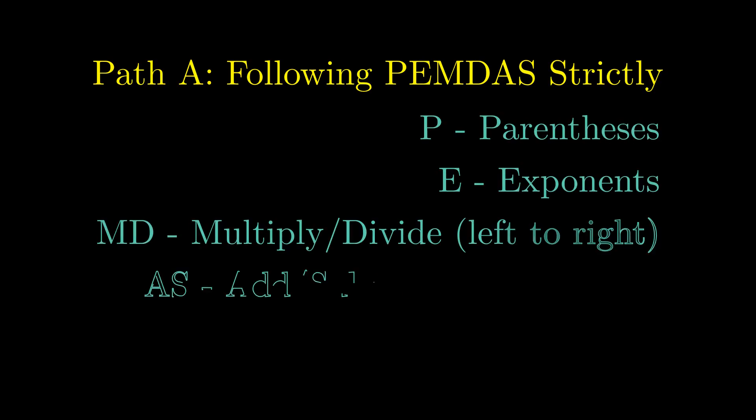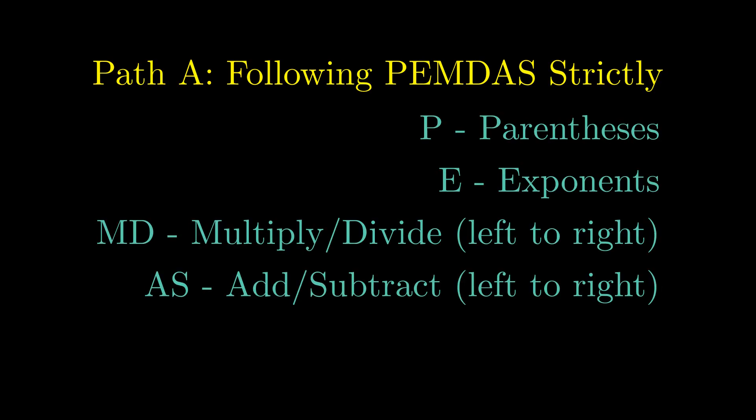Let's start with Path A, the textbook approach. We've all learned PEMDAS, so let's apply it systematically. The crucial insight: multiplication and division share the same priority level, and so do addition and subtraction. When two operations tie, we resolve them from left to right. That's the tiebreaker.